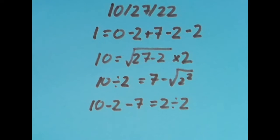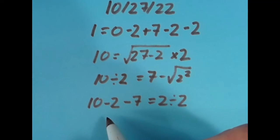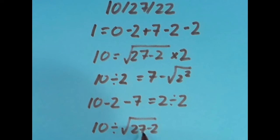And then lastly, what I did was I put the equal sign all the way to the right and I said that 10 divided by the square root of 27 - 2—so this is 25 under here, square root of 25 is 5, 10 ÷ 5, that's 2.